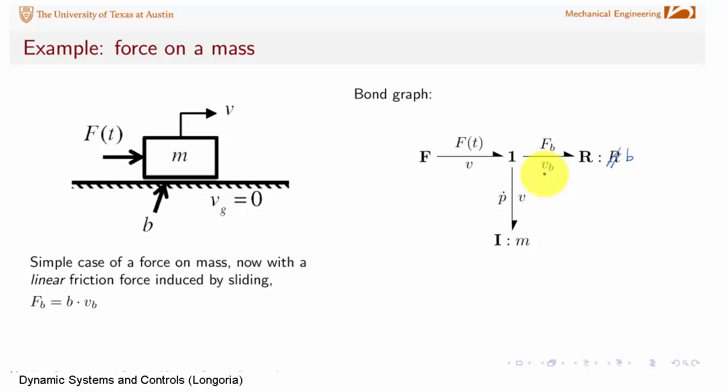So you can see this velocity v_b over here on the bond graph associated with this resistive element. And this right here should be a little b, shouldn't it? And that's the damping coefficient. This velocity b is, since this is on a one junction, is equal to v. We recognize that the ground's not moving, so the power being dissipated is f_b times v_b, and that velocity associated with the damping is equal to the velocity of the mass. So the structure of the model is pretty simple here. Don't really need a bond graph, but I just want to show you how we use causality and then how we derive the equations from the bond graph.